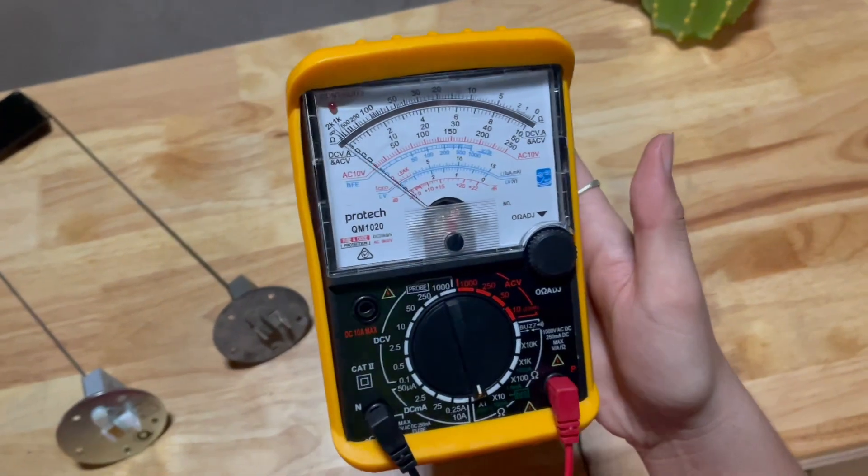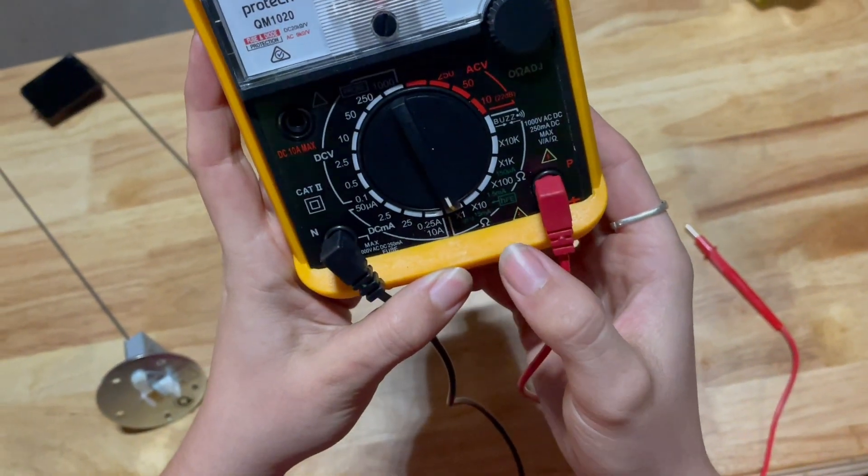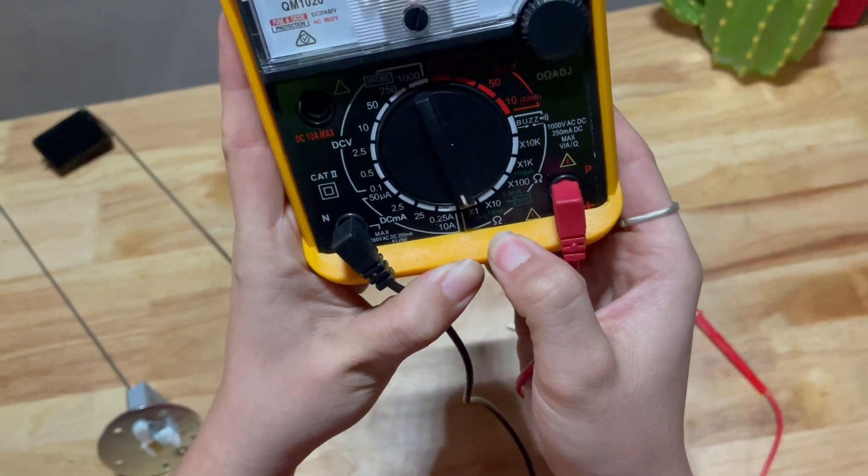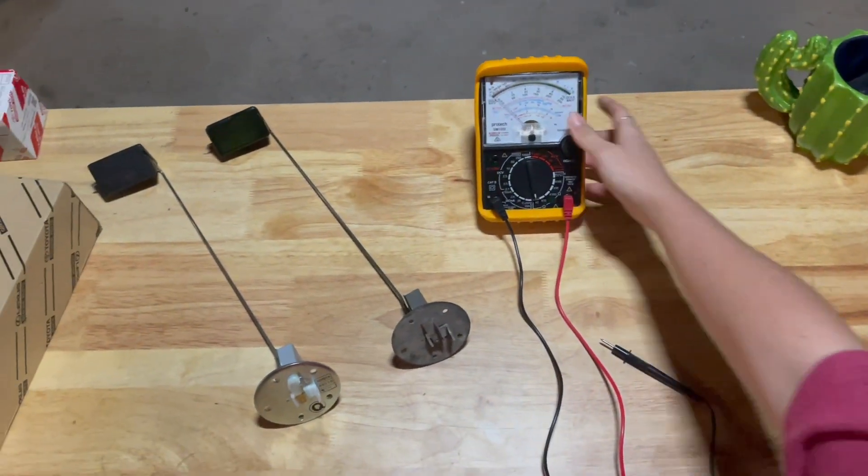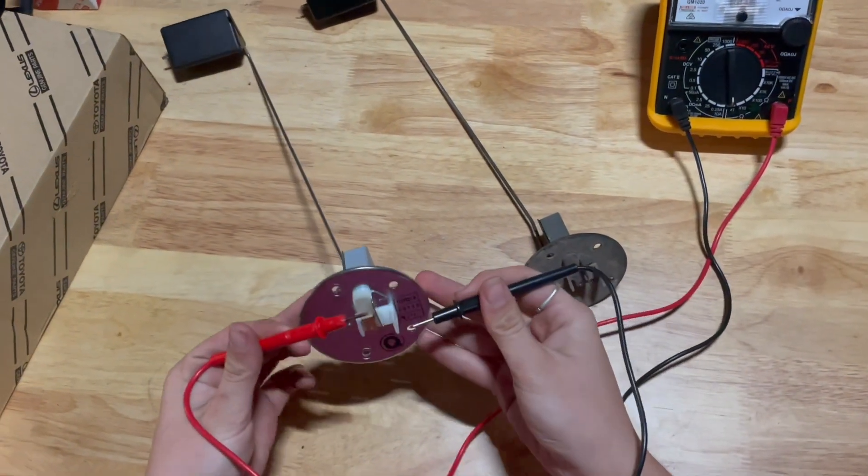You're going to grab a multimeter - this is an analog one, you can use a digital, it's the same thing. You're going to want to set it to ohms, which is your little horseshoe symbol down here. Then you want to get your probes, and I'll show you the new one, what the signal's meant to look like on the multimeter.